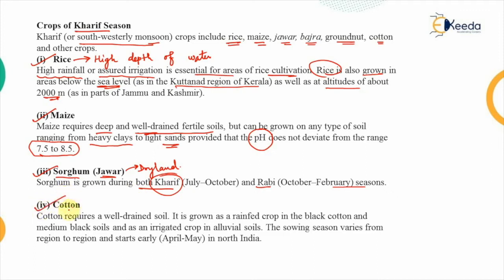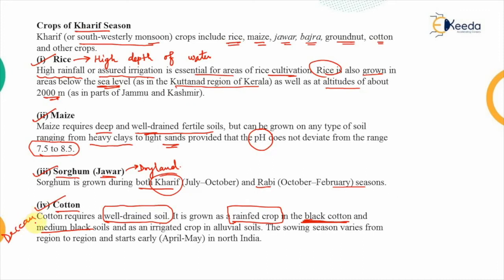Cotton requires well-drained soil where water is not held within the ground — drainage must be very high. It is grown as a rain-fed crop, meaning irrigation alone is not sufficient; cotton depends upon rainfall. The soil suitable for cotton is the black cotton soil or medium black soil, available in the Deccan region of India, particularly Maharashtra. The sowing season varies by region and starts as early as April to May.